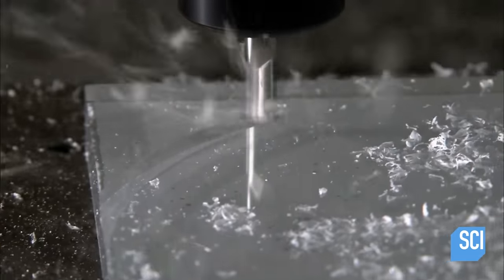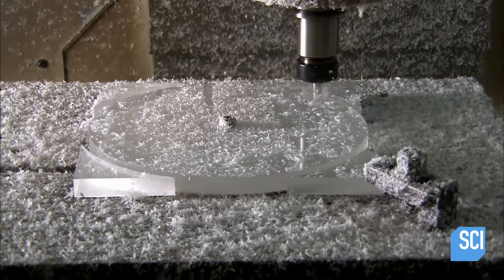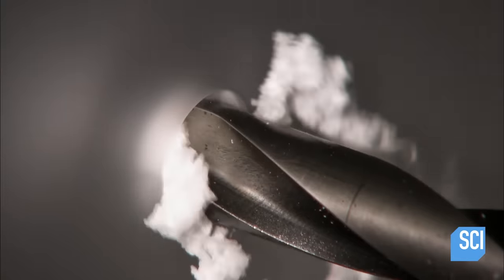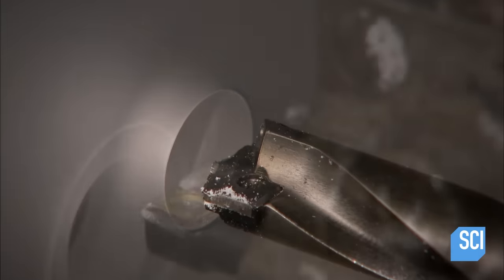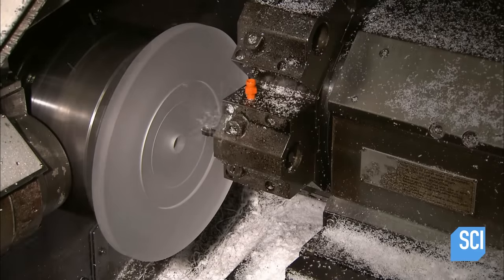A computerized tool cuts a circle shape out of the square. The disc then spins while another computer-guided tool enlarges the center hole to size it for the platter's main bearing. The next tool precisely cuts the surface of the disc to give it the correct angle.